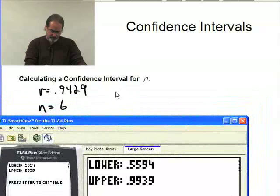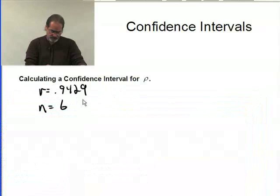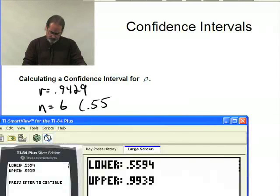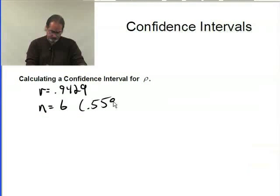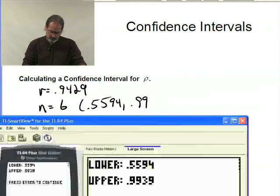Let me write this down somewhere real quickly here. For n equals 6, we had .5594 all the way to .9939.